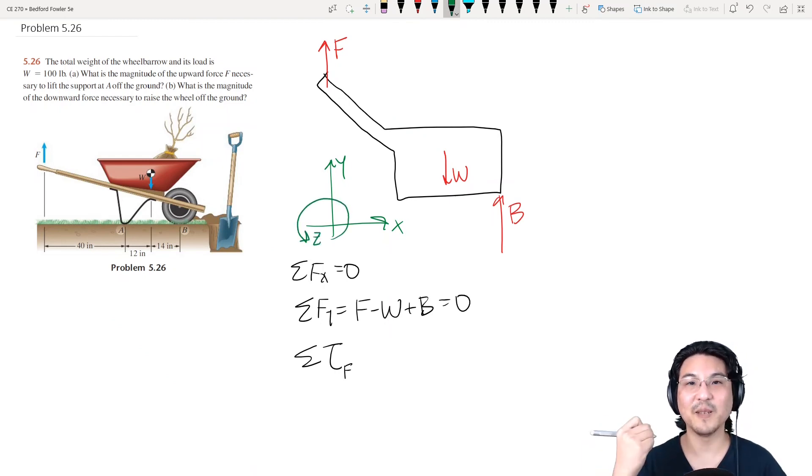Z would be out of the page, which is counterclockwise. So the torque by this force would be this way, which is clockwise. So that's in the negative Z direction. And then here to here is 52 inches and W.